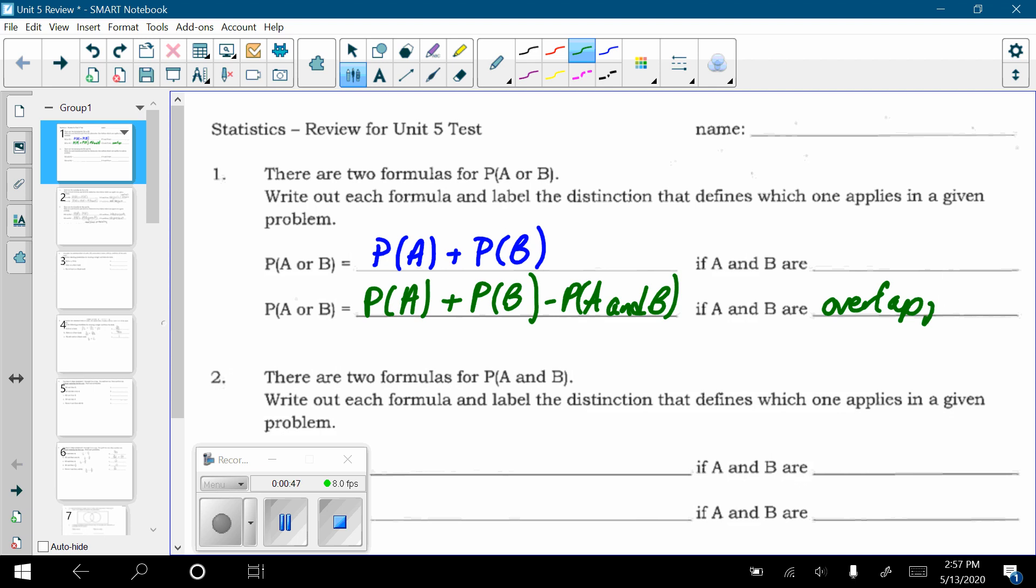So if A and B are overlapping, then you need to subtract the overlap. But if the two sets have no overlaps, like in a Venn diagram, they'd be completely separate from each other. That's called being disjoint or mutually exclusive. So you only have to subtract overlap if there is overlap.